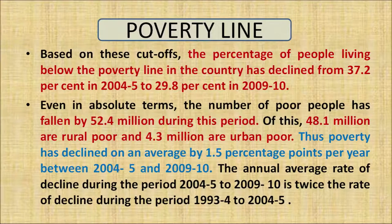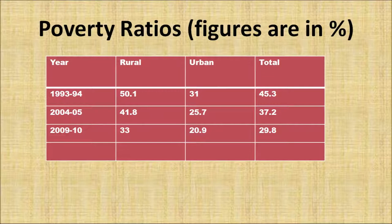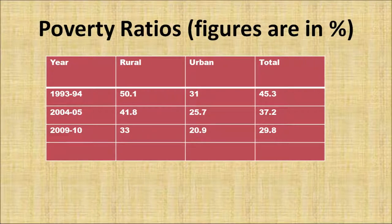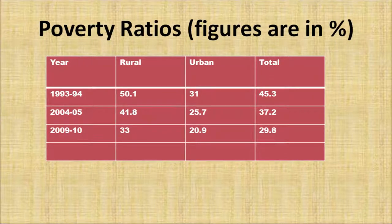Poverty has declined on an average by 1.5 percentage points per year between 2004-05 and 2009-10. Looking at the poverty ratio table: in 1993-94, 50 percent of people in rural areas were poor, 31 percent in urban areas, and the combined national average was 45 percent. In 2004-05, the rural figure fell to 41 percent. In 2009-10, 33 percent of the rural population, 20 percent of the urban population, and 29 percent overall are poor, as per the Tendulkar Committee poverty line estimates.